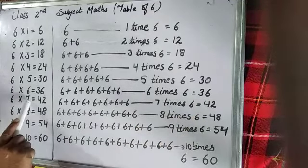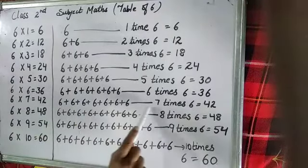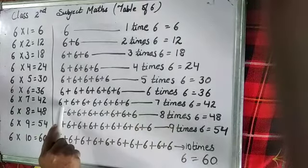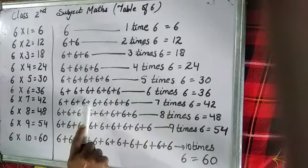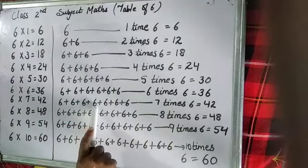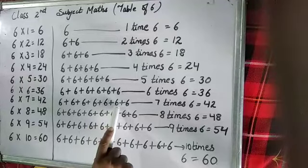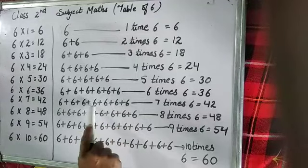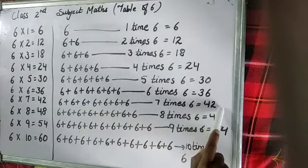6 7s are 42. And here is 7 times 6 — 1 times 6, 2 times 6, 3 times 6, 4 times 6, 5 times 6, 6 times 6, and 7 times 6. When there is 7 times 6, it will become 42.